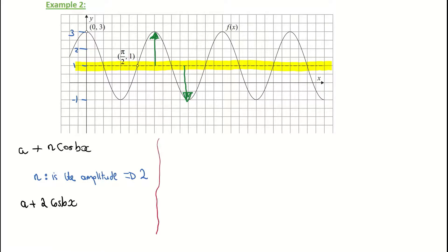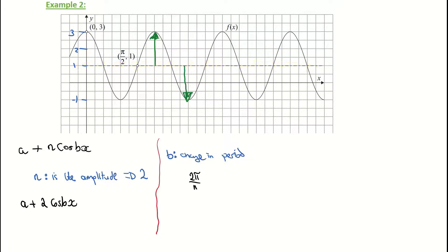Next we find b, which represents the change in the period — how often the graph repeats. A full rotation is two pi, so the period equals two pi over b. Looking at the graph, starting from the y-axis, the function comes down and comes back up — from top to top — and we need to figure out what that full period is.